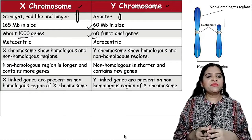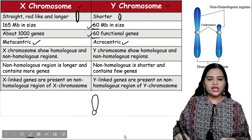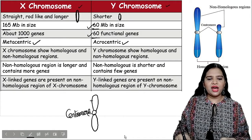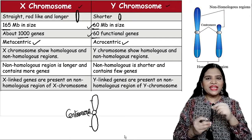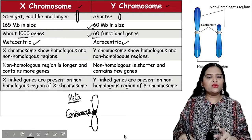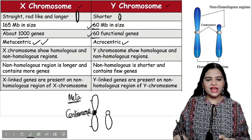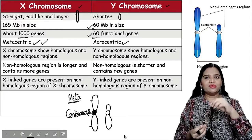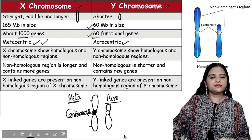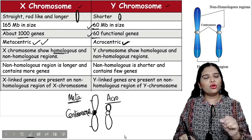Regarding shape, the X chromosome is metacentric, meaning both chromatids are equally placed from the centromere. The Y chromosome is acrocentric — one arm is larger and the other is shorter, so the chromatids are not equal from the centromere. Both X and Y chromosomes show homologous and non-homologous regions.